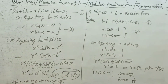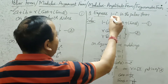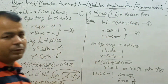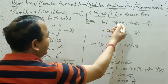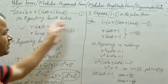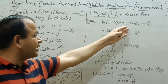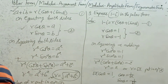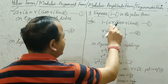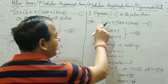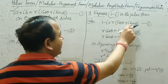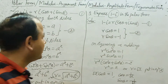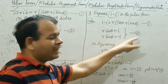Now let's take a question: express 1 minus i in polar form. So 1 minus i equals R(cos theta plus i sin theta). On equating both sides, R cos theta equals 1 (real part), and R sin theta equals minus 1 (imaginary part). Let this be equation two.